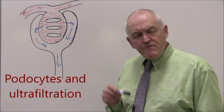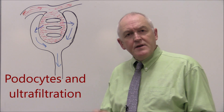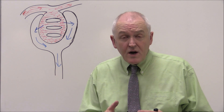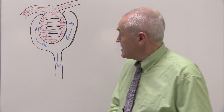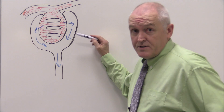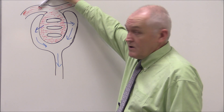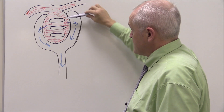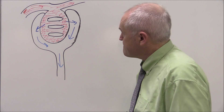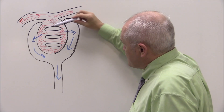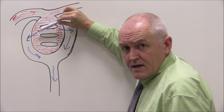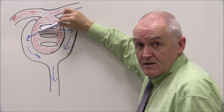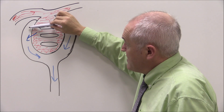In this talk we're carrying on considering the physical properties of the glomerulus that give rise to the process of ultrafiltration. The glomerular filtrate is forming via this process of ultrafiltration from the blood in the glomerular capillaries through to the glomerular space.